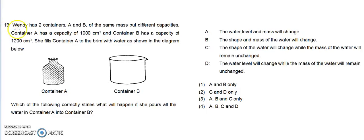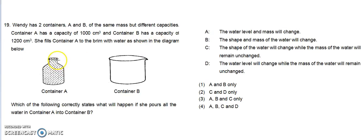Question 19. Wendy has two containers A and B of the same mass but different capacities. Container A has a capacity of 1000 cubic centimeters and container B has a capacity of 1200 cubic centimeters. She fills container A to the brim with water as shown in the diagram below. Which of the following correctly states what will happen if she pours all the water in container A into container B?